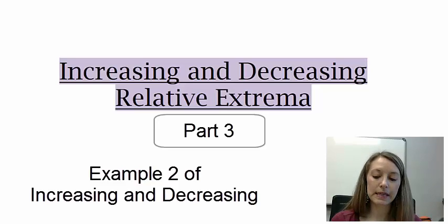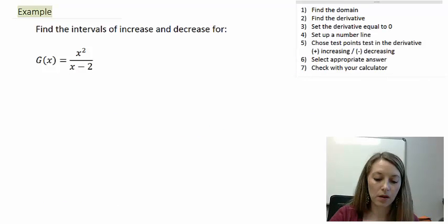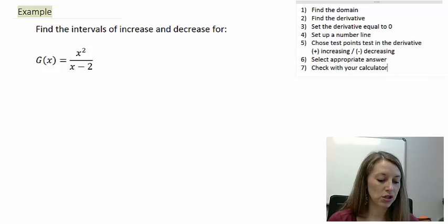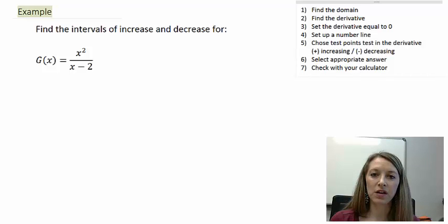Continuing on with increasing and decreasing functions, we're going to work through another example. This example is finding the intervals of increasing and decreasing for the g(x) function, where it's defined as x squared over x minus 2. I have the steps listed in the top right. I encourage you to pause the video and see if you can find the answer to this function on your own.